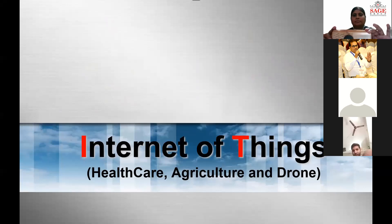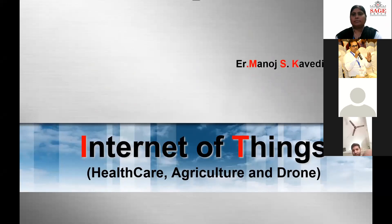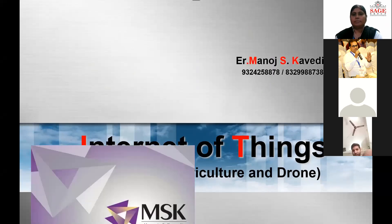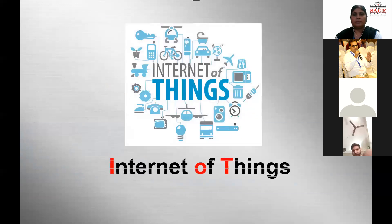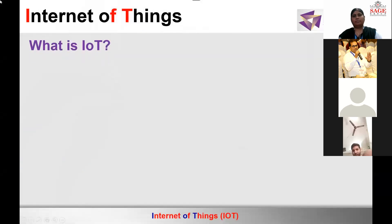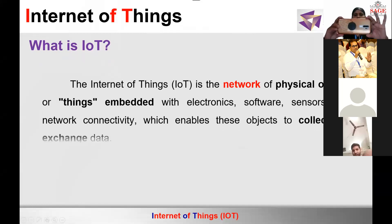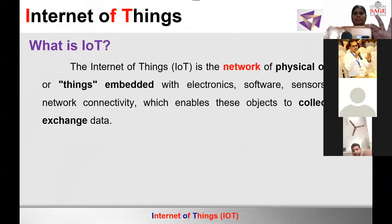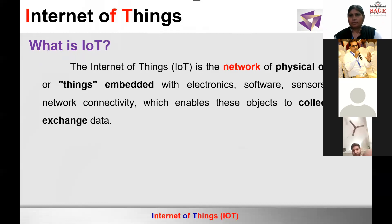Today's topic is Internet of Things, covering healthcare, agriculture, and drone. First, let's quickly understand what we mean by Internet of Things. Today, IoT is a very big buzzword. What is IoT basically? IoT is nothing but a network of physical objects.